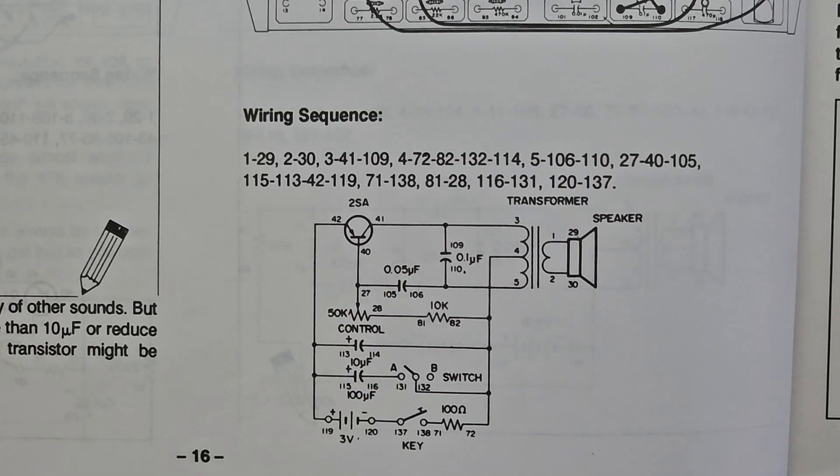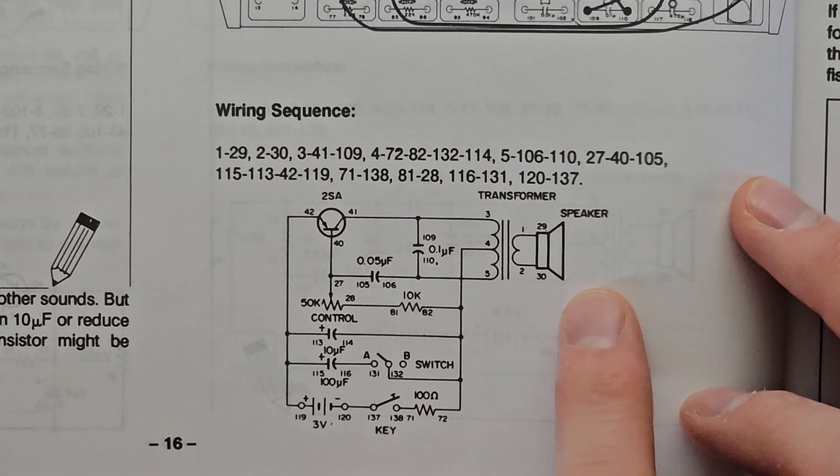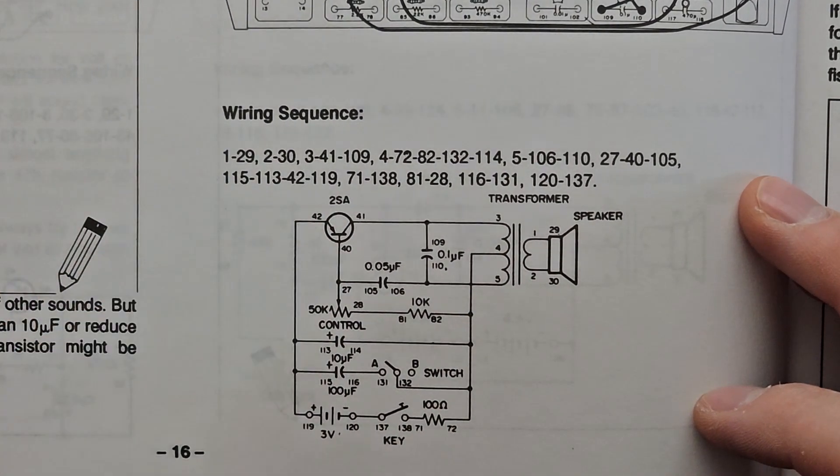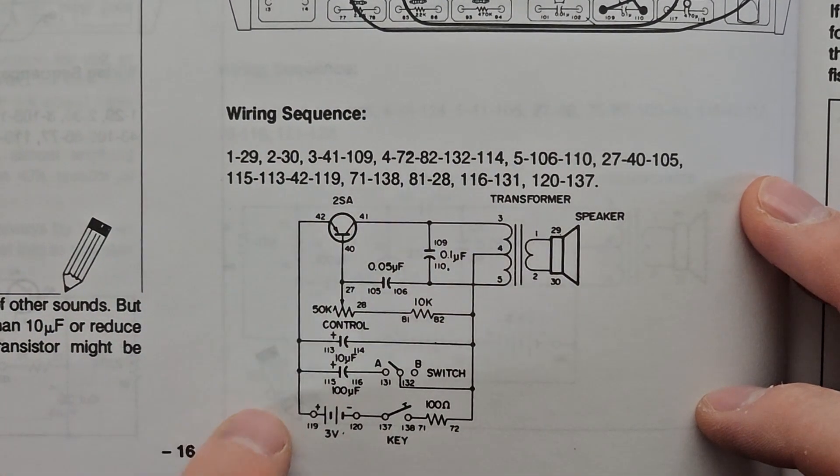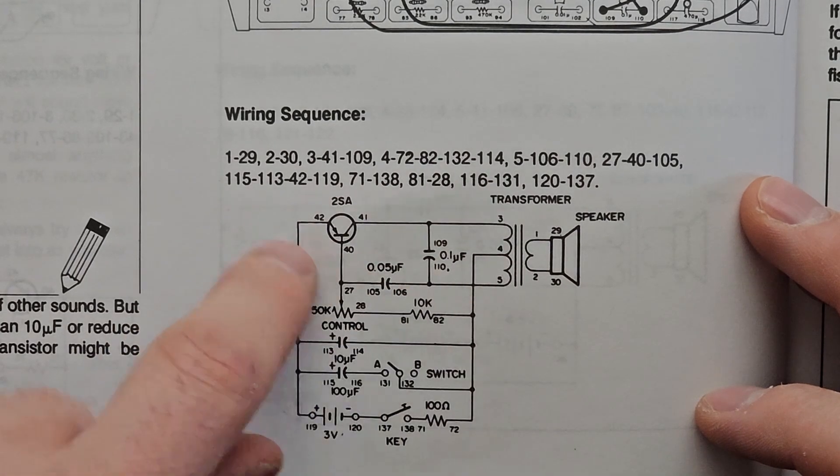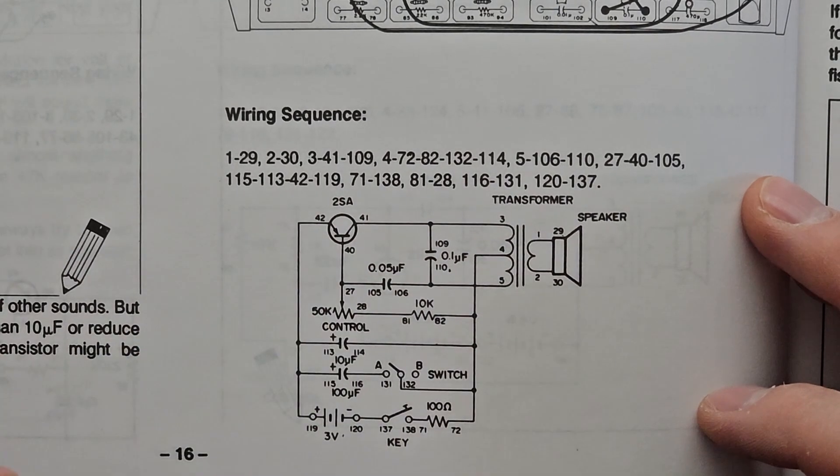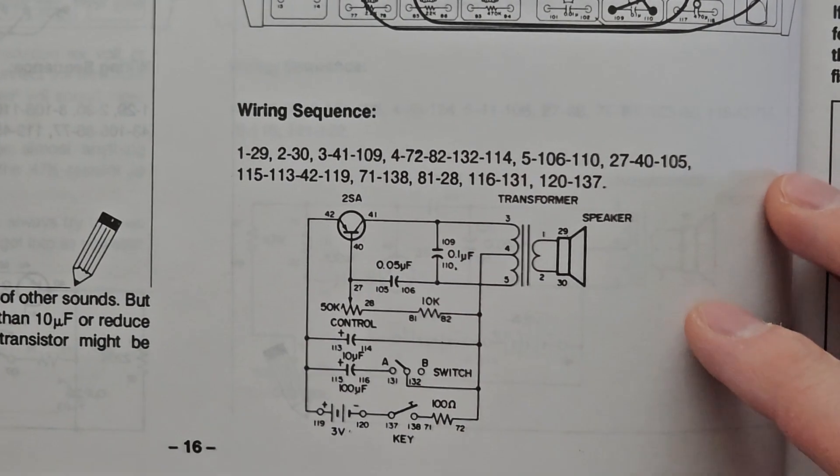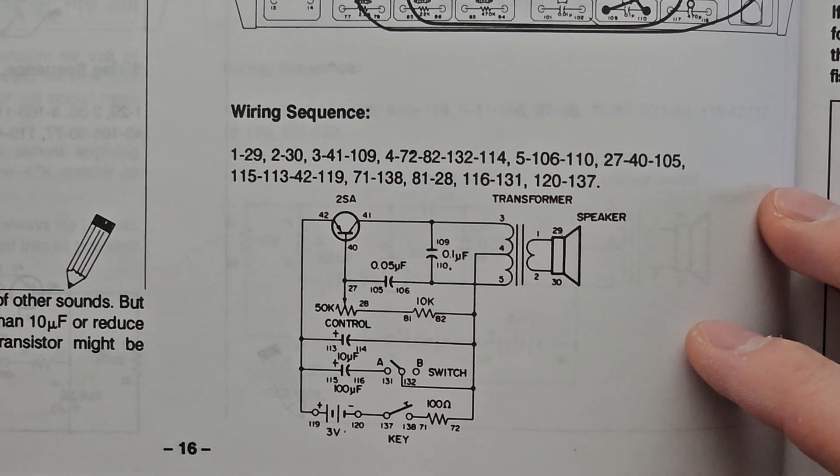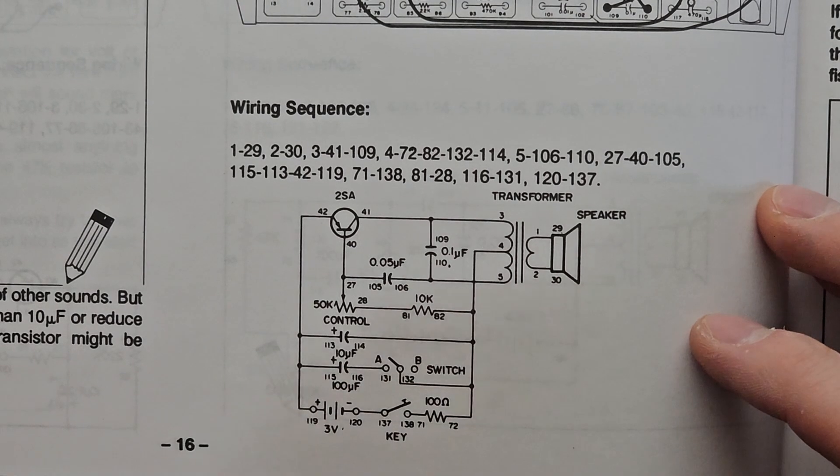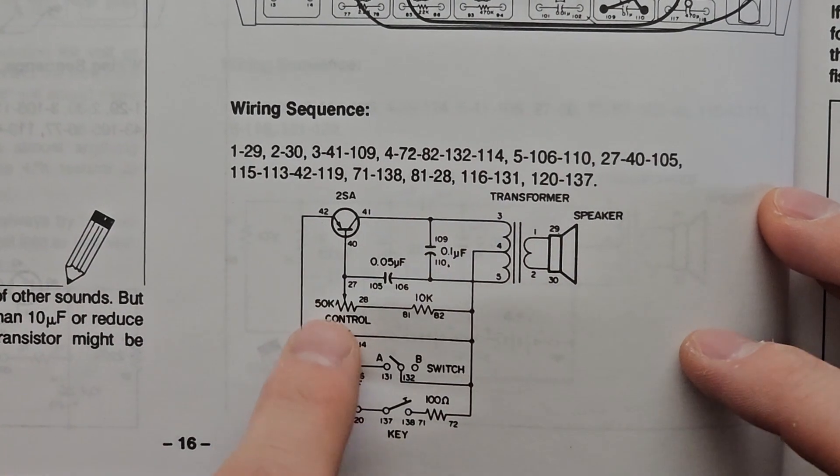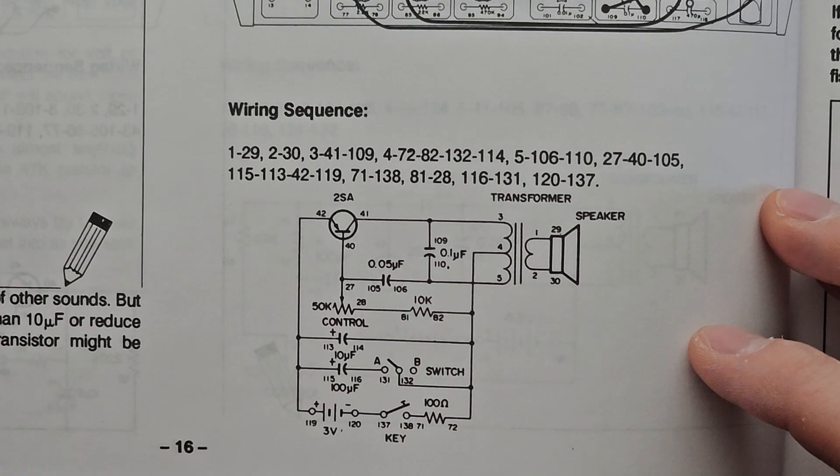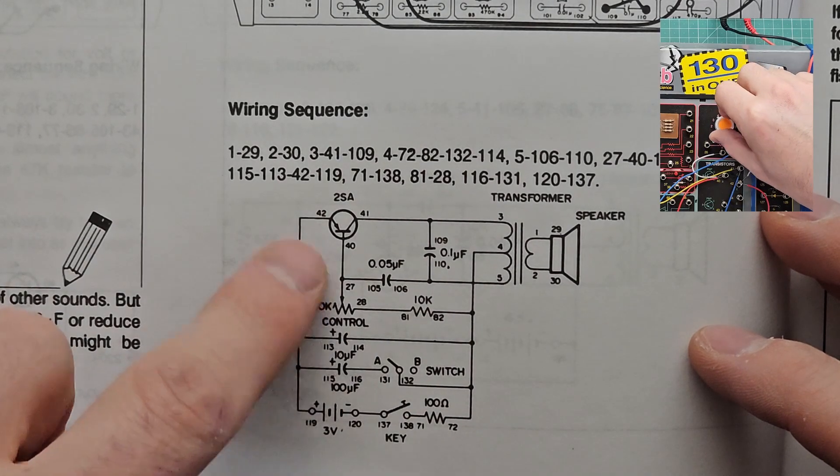So it's a fairly simple circuit. Essentially we have a speaker that's making the noise that you hear. This is being driven through a transformer by a BJT and that's got a 3 volt power supply. The circuitry around the BJT allows it to oscillate so that we get the oscillating waveform through the speaker, and the frequency of that oscillation changes the pitch of the sound that you hear. We can control this frequency by this potentiometer which is attached to the base of the transistor, and increasing or decreasing the resistance changes the pitch.